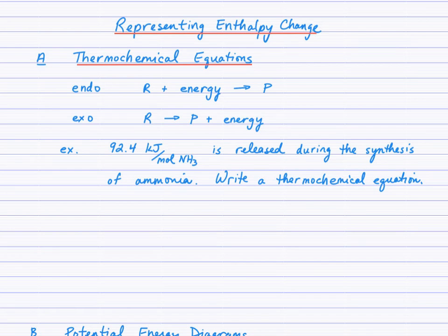Representing enthalpy change, we do this in two ways: one by thermochemical equations and secondly with potential energy diagrams. You may recall that the energy term is on the left side of the arrow in an endothermic reaction, and that the energy term is on the product side or the right side of the arrow in an exothermic reaction.